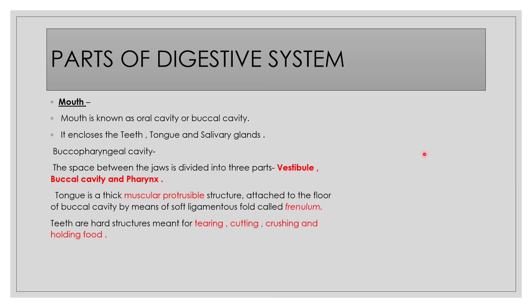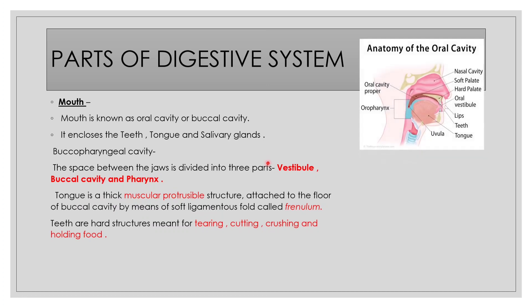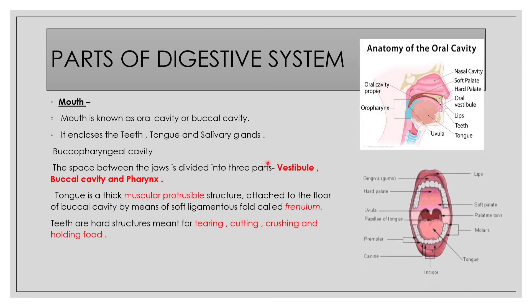Moving towards the various parts of the digestive system, the mouth is the major organ, also called the buccopharyngeal cavity. It possesses teeth, tongue, and various salivary glands. The major function of teeth is tearing, cutting, crushing, and providing mechanical digestion.